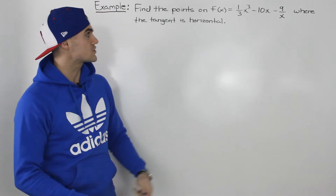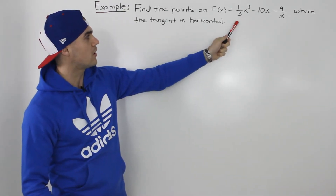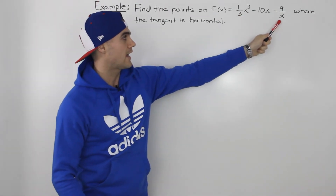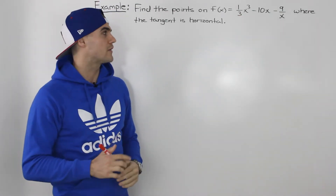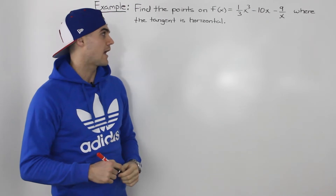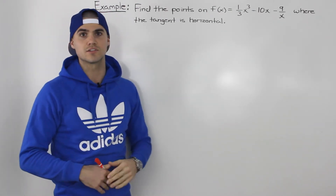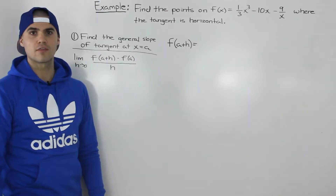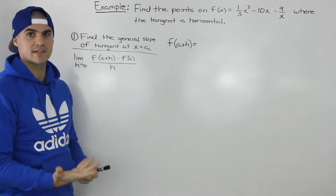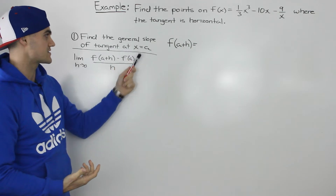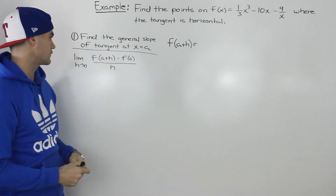Now, if you notice, in this question, this function is a combination of a polynomial cubic and a reciprocal function. So there's going to be a lot of algebra in this question. The first step is to find the general slope of the tangent formula at an x value of a, and to do that, we're going to use the difference quotient.